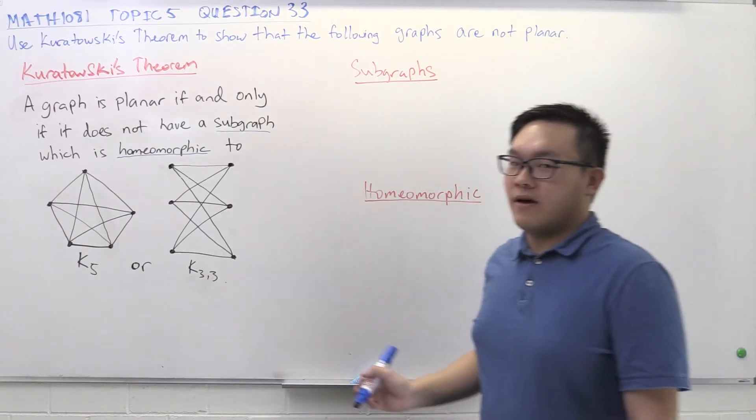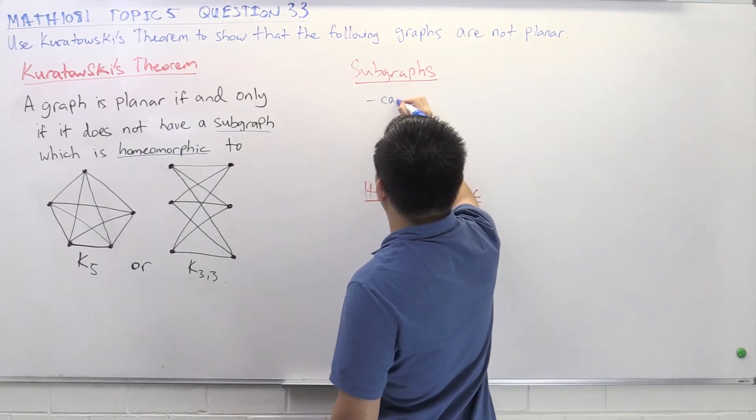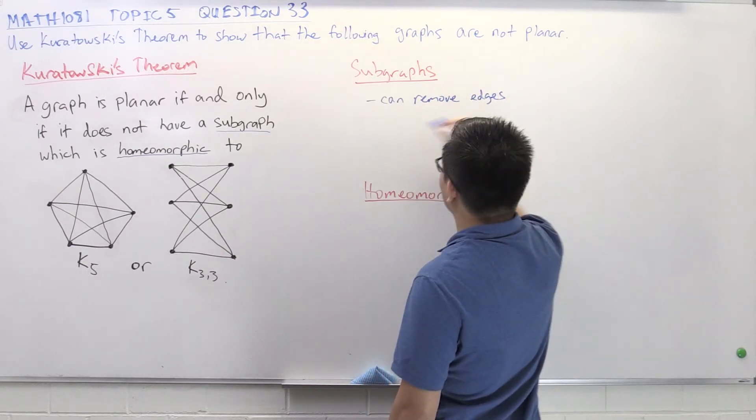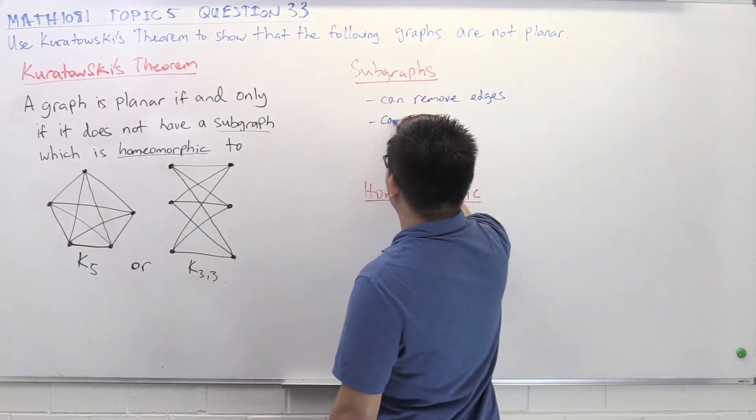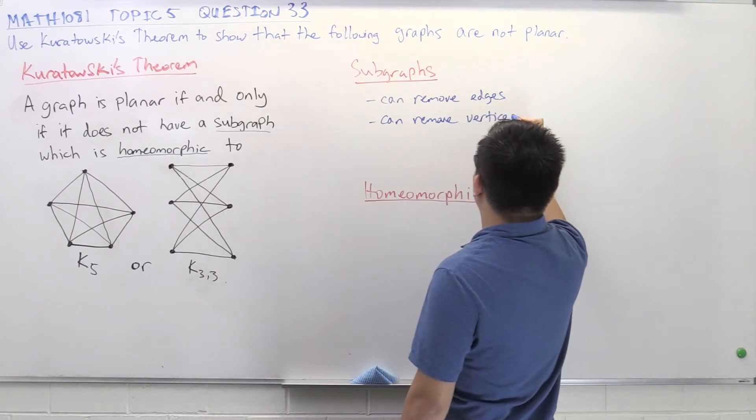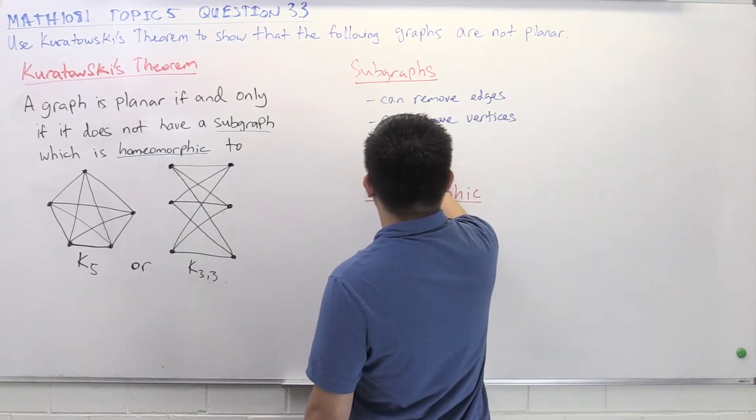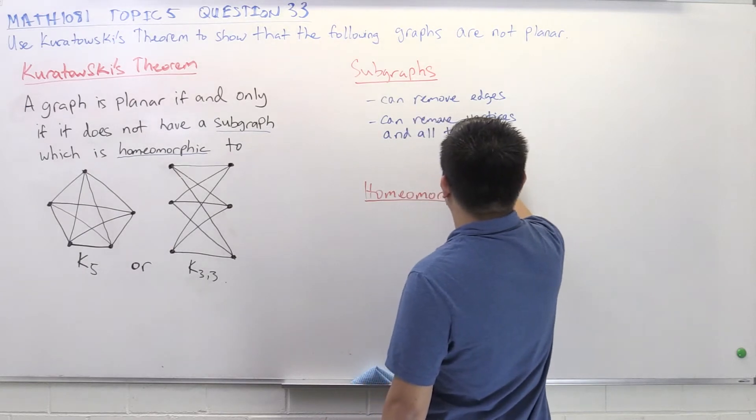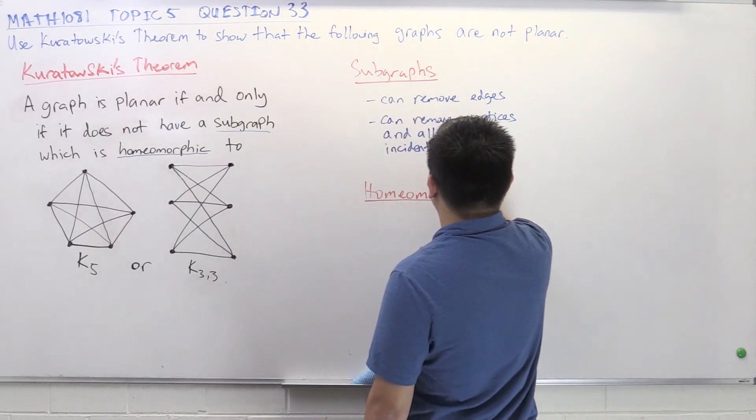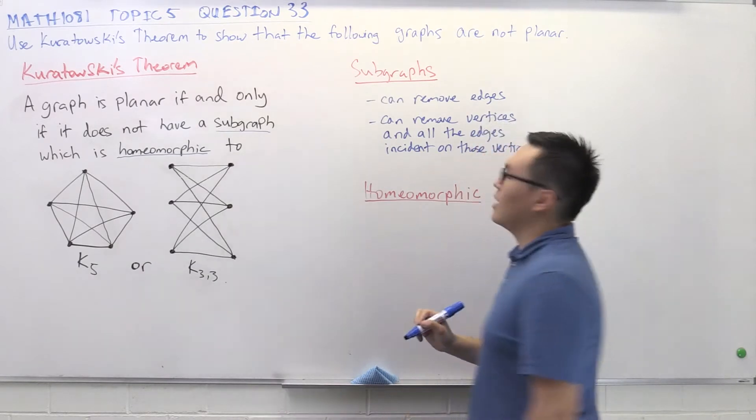So what does it mean to be a subgraph? How can we construct a subgraph? We're allowed to do two things. The first thing we're allowed to do is we're allowed to remove edges. We can remove any edges we like. We're also allowed to remove vertices, but when we remove a vertex, we have to remove all of the edges that are incident on that vertex.